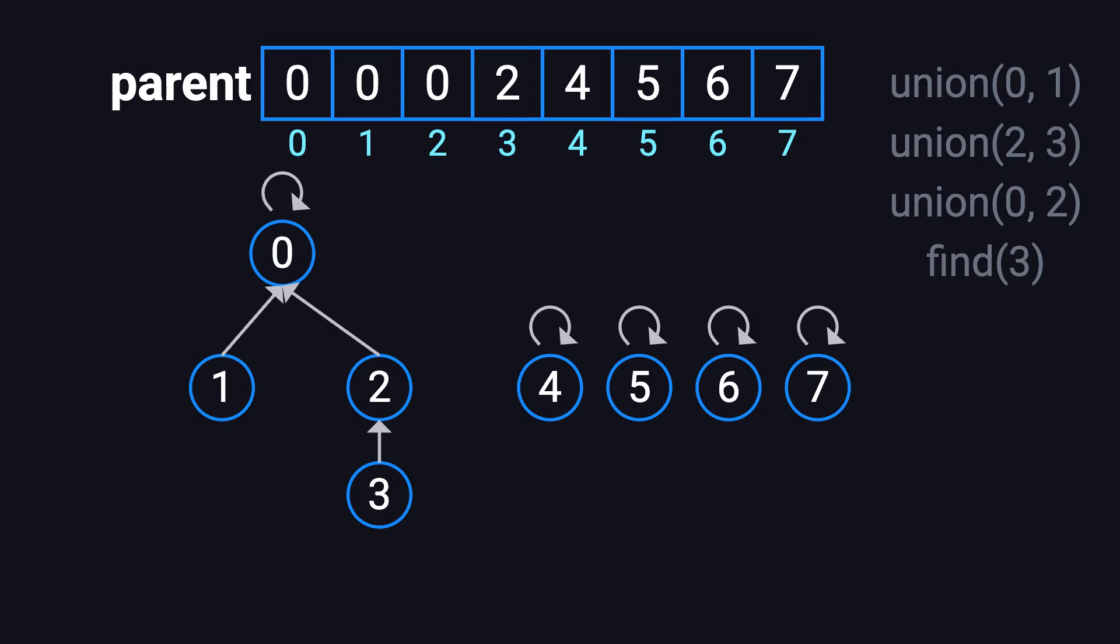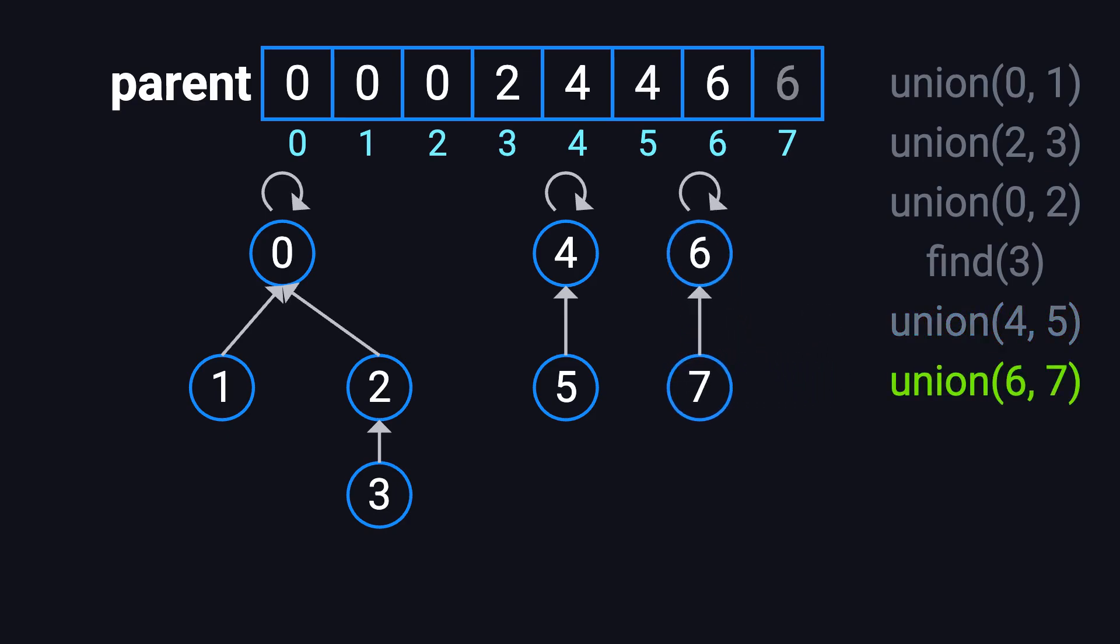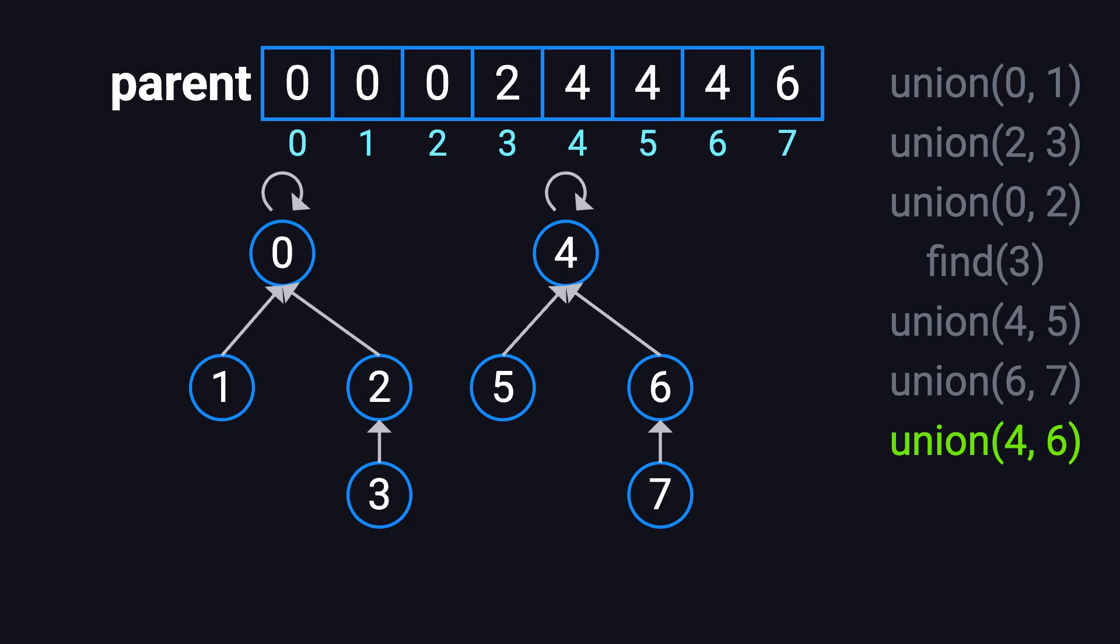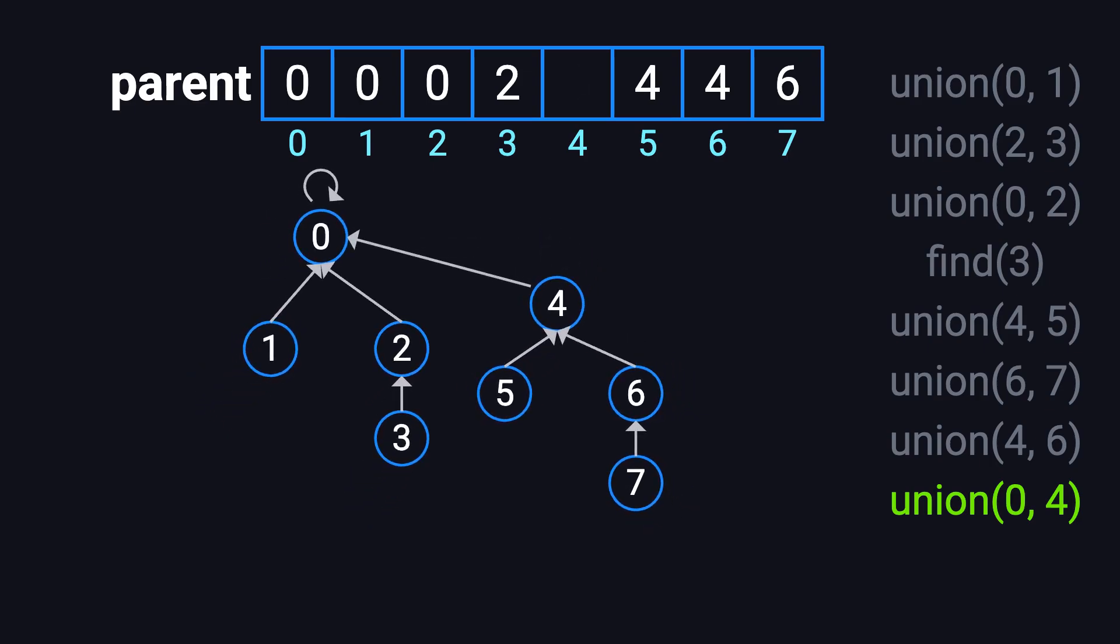Let's do a few more unions. We perform Union(4, 5), then Union(6, 7), and then Union(4, 6). This connects elements into one group. Finally, we perform Union(0, 4), merging the tree rooted at 4 into the tree rooted at 0. At this point, all the elements are connected under one big tree, with 0 as the root.